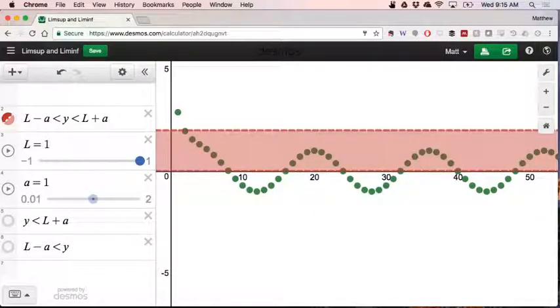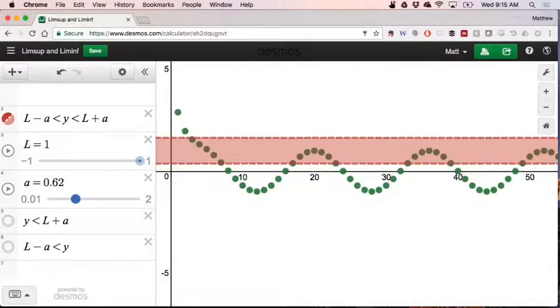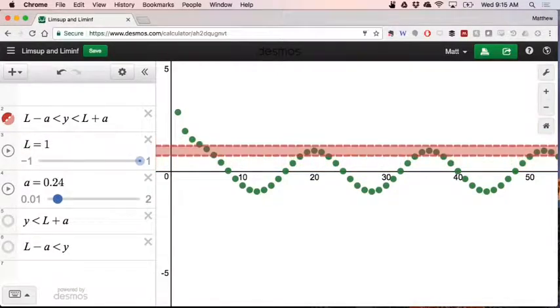And one of the ways we can see that is that if we take the tops of all of these little peaks, that just those terms in the sequence which are at the tops of these peaks, those terms do eventually enter into this little epsilon strip centered at 1 and never leave. So there exists a subsequence that converges to that.